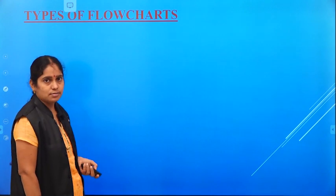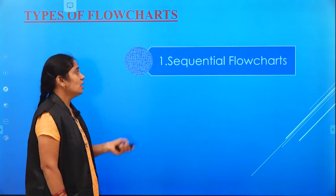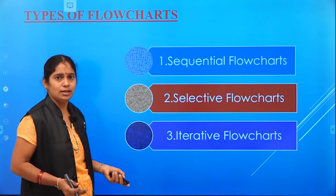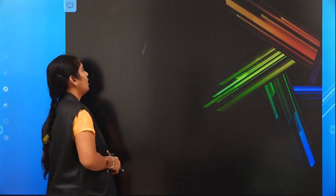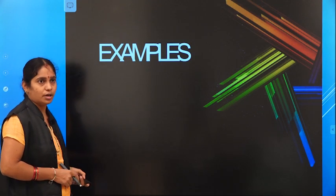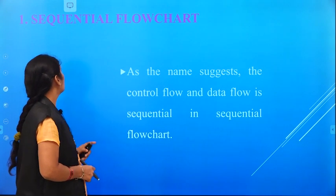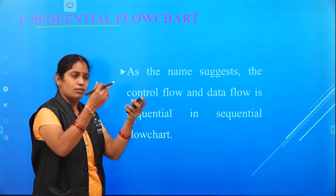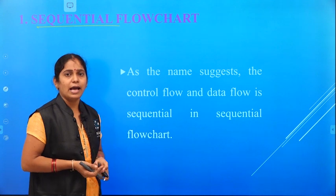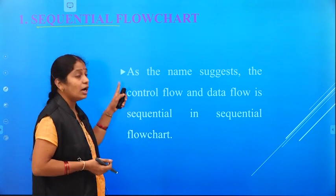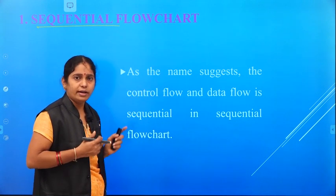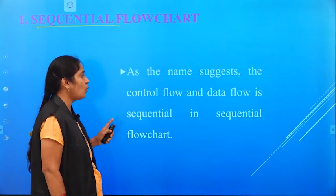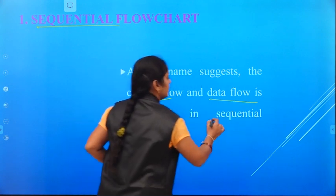Now see the types of flowcharts. We have three different types: sequential, selective, and iterative flowcharts. In a sequential flowchart, the flow is in the same order as specified. If we have steps 1, 2, 3, 4 up to 10, the flowchart also follows the same order. The same order it follows to execute — that is sequential. The control flow as well as the data flow are both in a sequential manner.